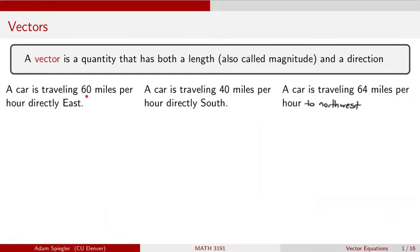A car is driving 60 miles per hour east. We have a magnitude, the speed, and we have a direction, which is east. A car driving 40 miles per hour south, our speed again would be our magnitude, and then the direction that we're moving makes this a vector.